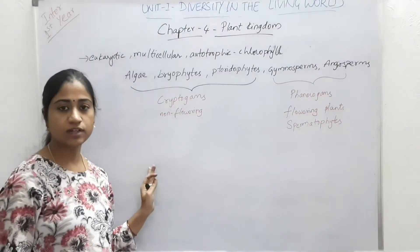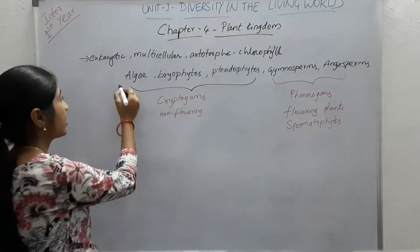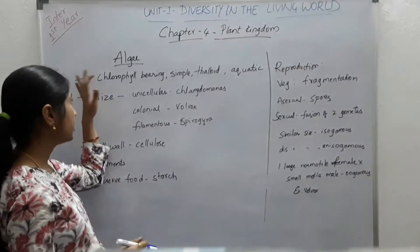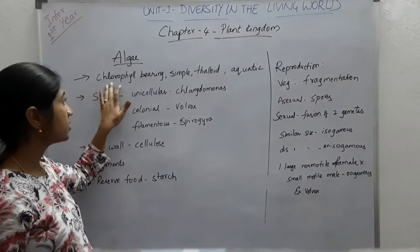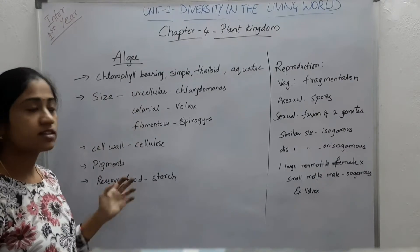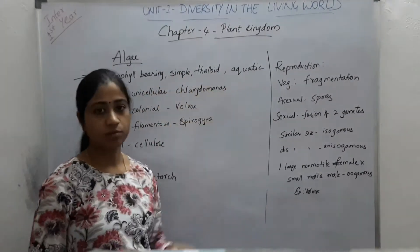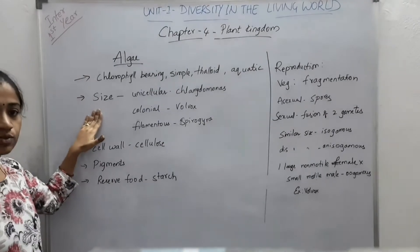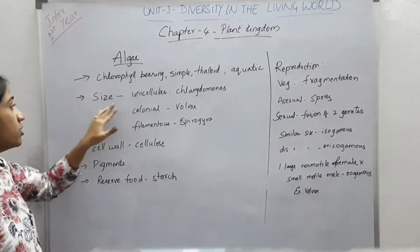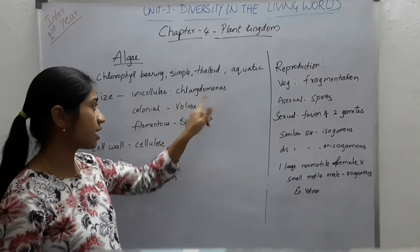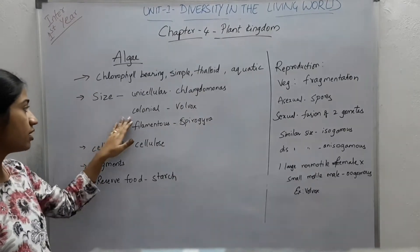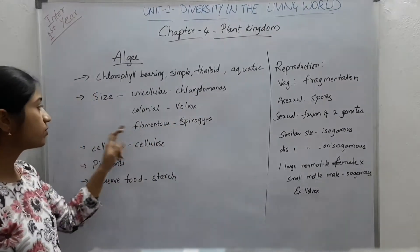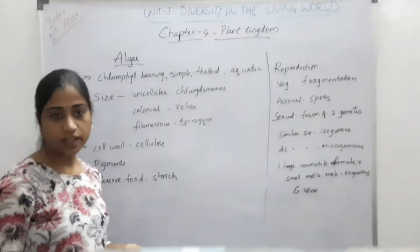In this video we are going to discuss about the characteristics and classes of algae. Algae bear chlorophyll. They are simple thalloid structures and mostly aquatic organisms. Their size varies from unicellular — example is Chlamydomonas — to colonial — example is Volvox — and some are filamentous, example is Spirogyra.